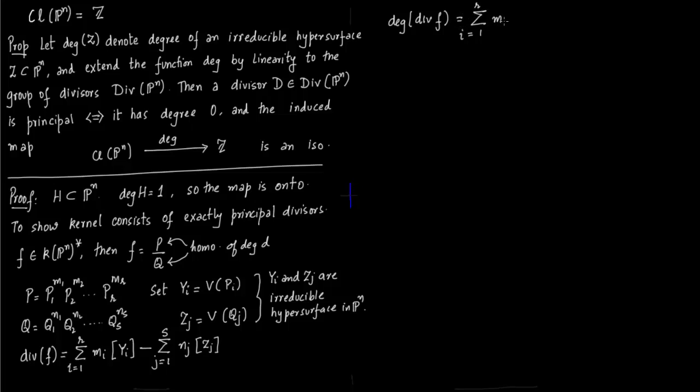P_i's are going to Y_i's in the numerator, and Q_j's are going to Z_j's in the denominator. Now you take the degree of divisor of F. We have already said that the degree map extends by linearity, so it just goes inside and you get degree of Y_i inside and degree of Z_j inside. This is nothing but degree of the polynomial P and degree of polynomial Q.